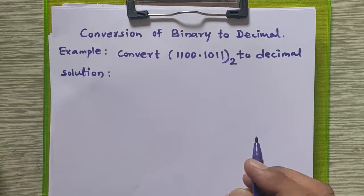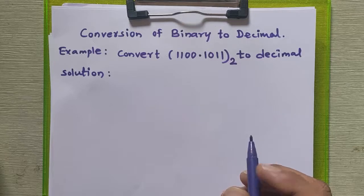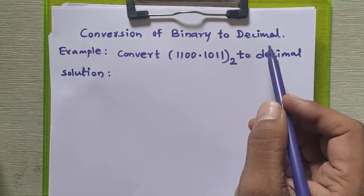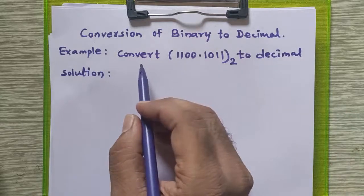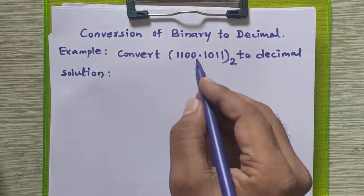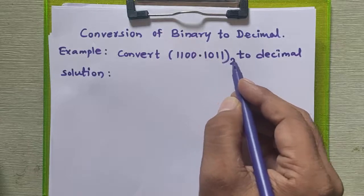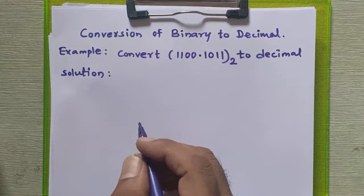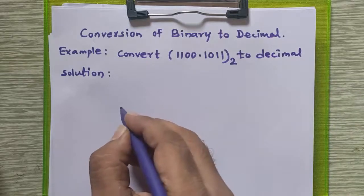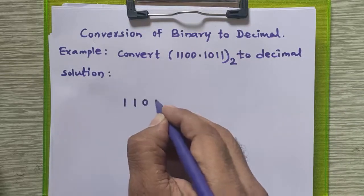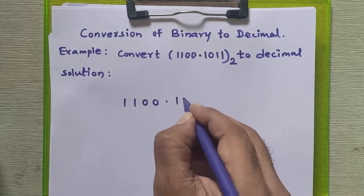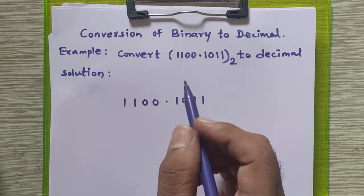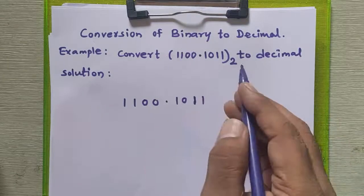Hello everyone. In this tutorial, we are going to study how to convert any binary number to decimal number. Consider this example: we want to convert 1100.1011 binary to decimal. The first thing we have to do is write the binary number as it is in the solution part.